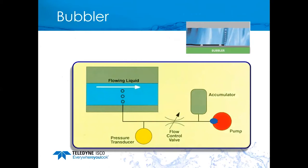The bubbler uses an air pump usually built into the meter. The pump builds pressure into an air tank then slowly releases it through a control valve at about one to two bubbles per second. A pressure transducer measures the pressure required to push out one bubble from the end of the bubble line. The higher the water height above the end of the bubble line, the more pressure required — which is directly related to the level.